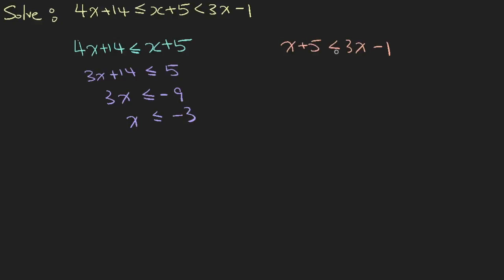For the other equation, we do the same. We bring the 3x to the left-hand side, and then you will have minus 2x. We minus 5 on both sides, so you will have less than minus 6. Now x is greater than minus 6 divided by minus 2, which is 3. Remember that the sign flips when you divide or multiply by a negative number.